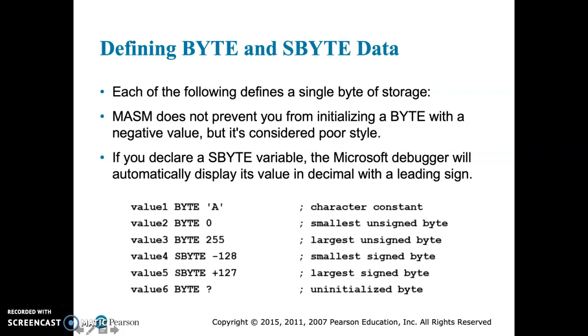Second example there, we've got the smallest unsigned byte which is 0. We have the next one is the largest unsigned byte. Remember a byte is 8 bits of data. It essentially is a number between 0 and 255. So that's our range of values for a byte.